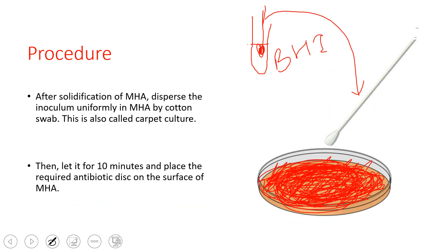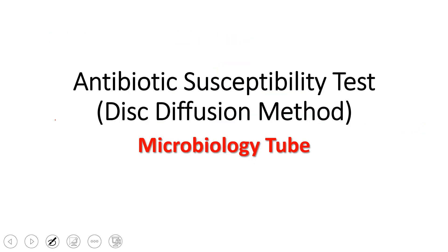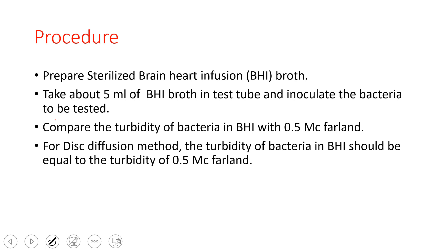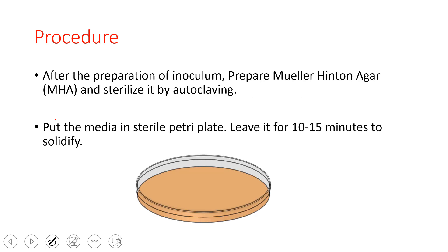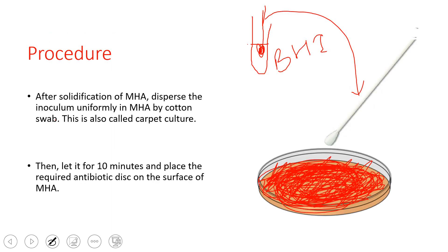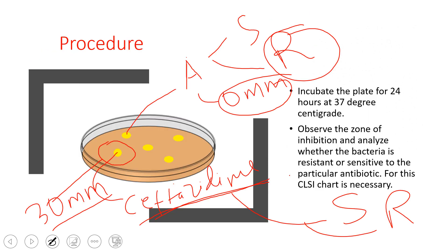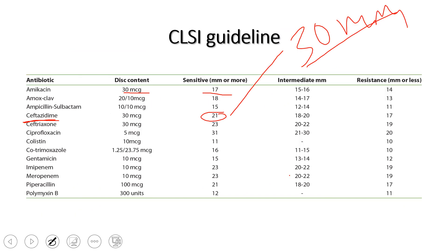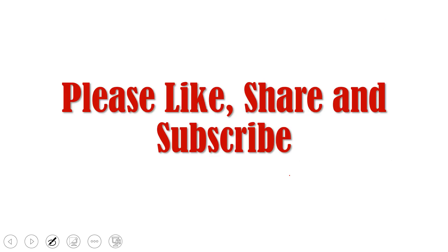In summary: prepare the brain heart infusion broth, inoculate the microorganisms, and match the turbidity with 0.5 McFarland standard. Prepare and sterilize the Mueller Hinton agar in a sterile petri plate. Perform the streak culture, leave the plate 10 minutes, then place the antibiotic disks. Incubate for 24 hours at 37 degrees centigrade, observe the zone of inhibition, and compare with the CLSI guidelines to determine whether the bacteria is sensitive, resistant, or intermediate. Thank you for watching — please like, share, and subscribe.